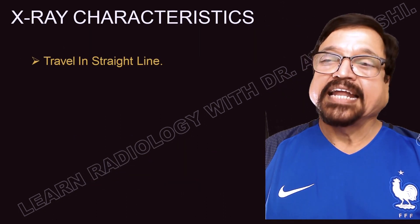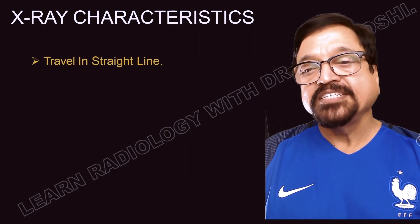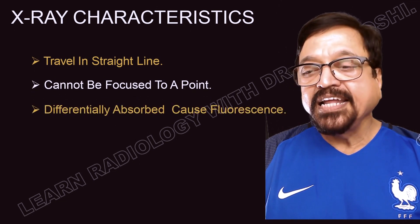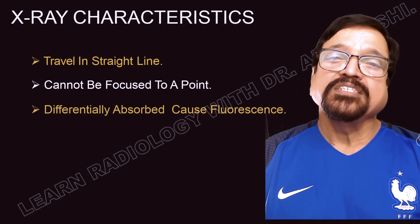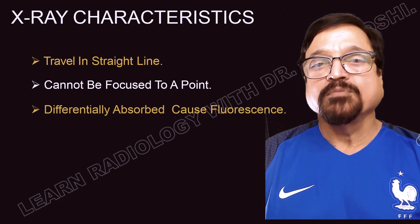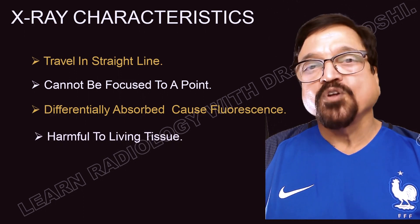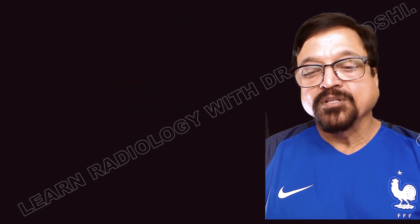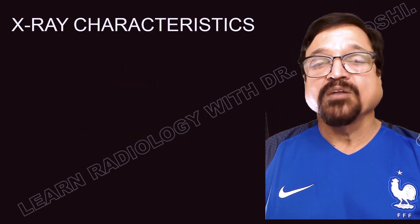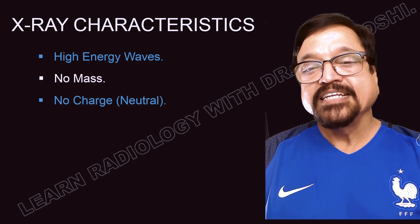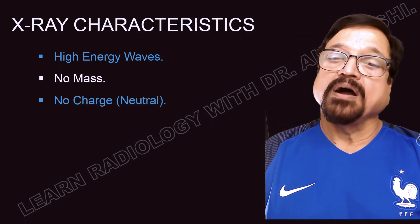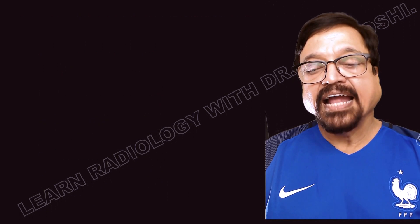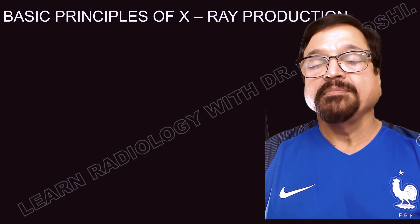The exact characteristics of X-rays are: they are electromagnetic waves, they travel in a straight line, they cannot be focused to a point, they are differentially absorbed and cause fluorescence — a topic covered extensively in the same lecture series. They can have harmful biological effects and are potentially dangerous. They are high-energy waves with no mass and no charge — neutral — and they travel at the speed of light. They are invisible; you cannot smell or feel them.